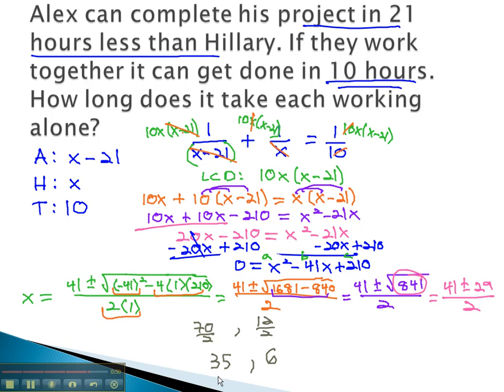We have two possible answers for x, 35 and 6. x is Hillary. However, we must remember that Alex is x minus 21. We cannot subtract 21 from 6 without getting a negative number, and it would not make sense that Alex could do a job in negative 15 hours. Hillary must be then 35.